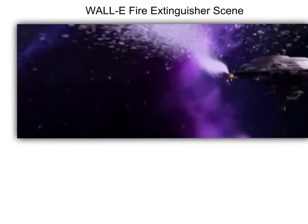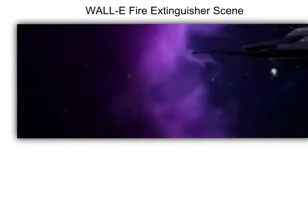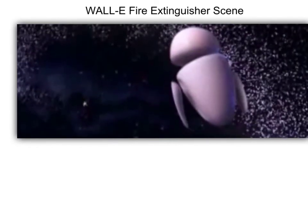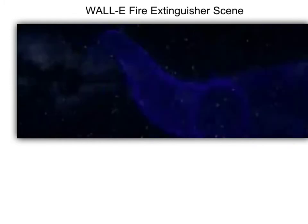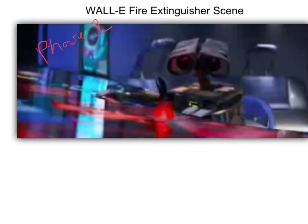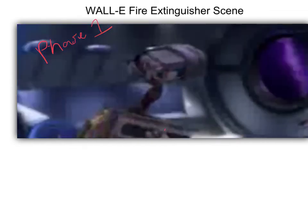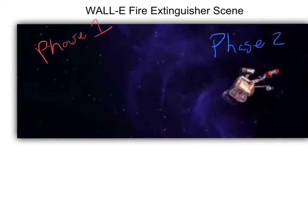So here comes WALL-E with his fire extinguisher, and our actual scene of interest starts right about here. This is phase one of the motion, and then phase two is when he turns on the fire extinguisher. So phase one goes from here to about there, and then at this point when he turns on the fire extinguisher, this is going to be our phase two.